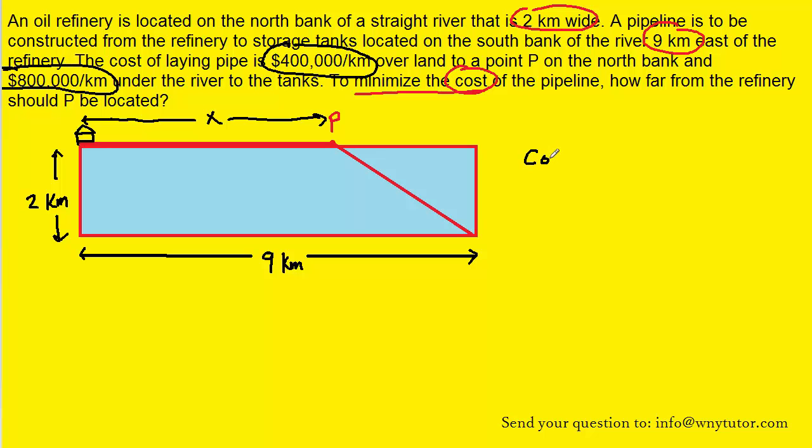The basic idea is that the cost will equal whatever the distance is multiplied by the price per kilometer. For example, across the land, we have a distance of x and a price per kilometer of $400,000. So we could say that the cost across land is $400,000x. Over the water, it's a little more challenging because we don't have anything labeled for this distance right here. So that becomes our next task.